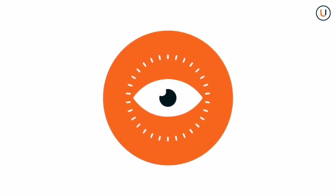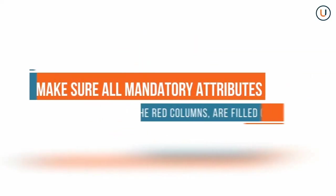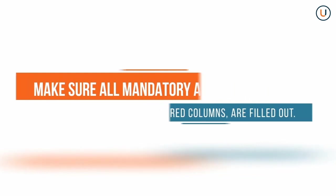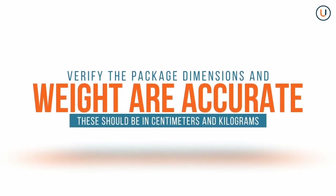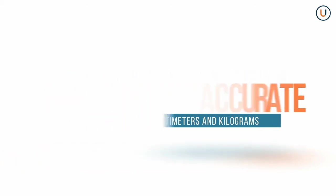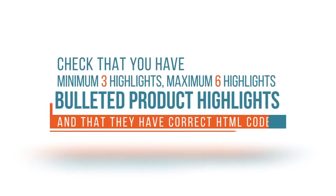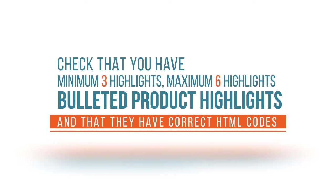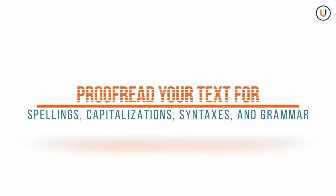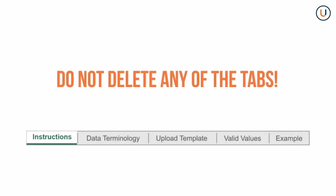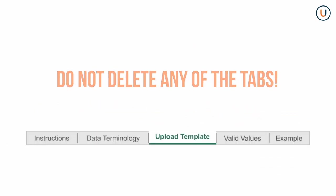Once you have filled out everything, do one final review. Make sure all mandatory attributes — the red columns — are filled out. Verify that package dimensions and weight are accurate, since this will set the shipping charge for your product; values should be in centimeters and kilograms. Check that you have a minimum of three to six bulleted product highlights with correct HTML codes. Proofread your text for spelling, capitalization, syntax, and grammar. Do not delete any of the tabs in your template — you may only edit the Upload Template tab for inputting your product information.